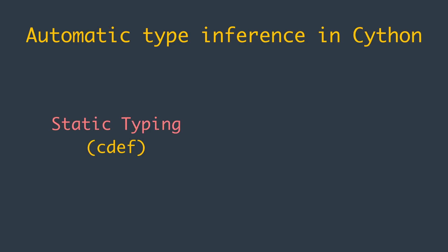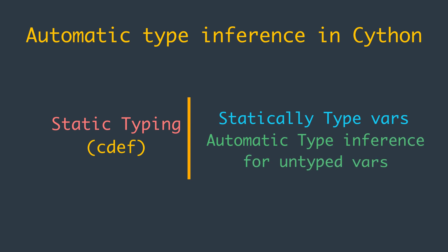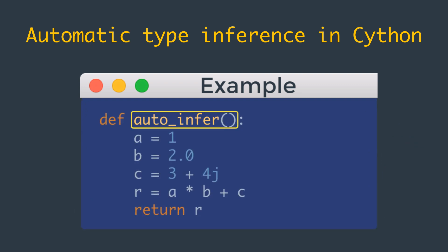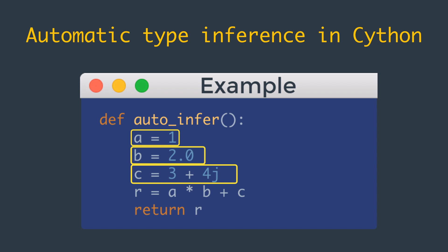Now let's talk about automatic type inference in Cython. Using cdef is not the only way to statically type variables — Cython also performs automatic type inference for untyped variables inside function bodies. By default, it infers variable types only when doing so cannot change the semantics of the code. In the example function auto_info, Cython types the literals 1 and 3+4j and variables a, c, and r as general Python objects, conservatively assuming the integer a may not be representable as a C long.